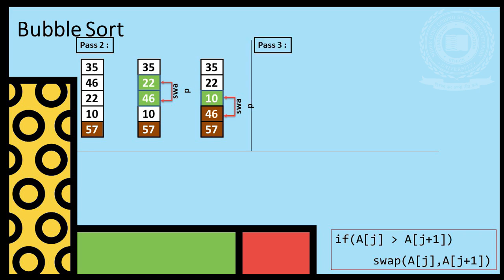Now, pass 3. We compare 35 and 22 and swap. Now, we compare 35 and 10 and swap. Three elements are at correct locations.